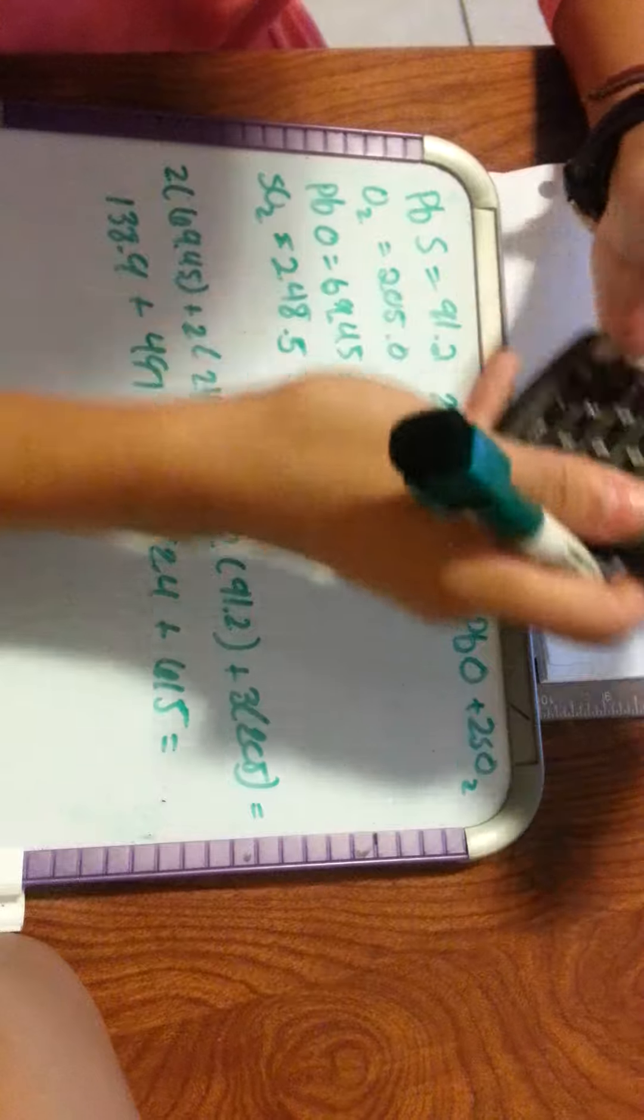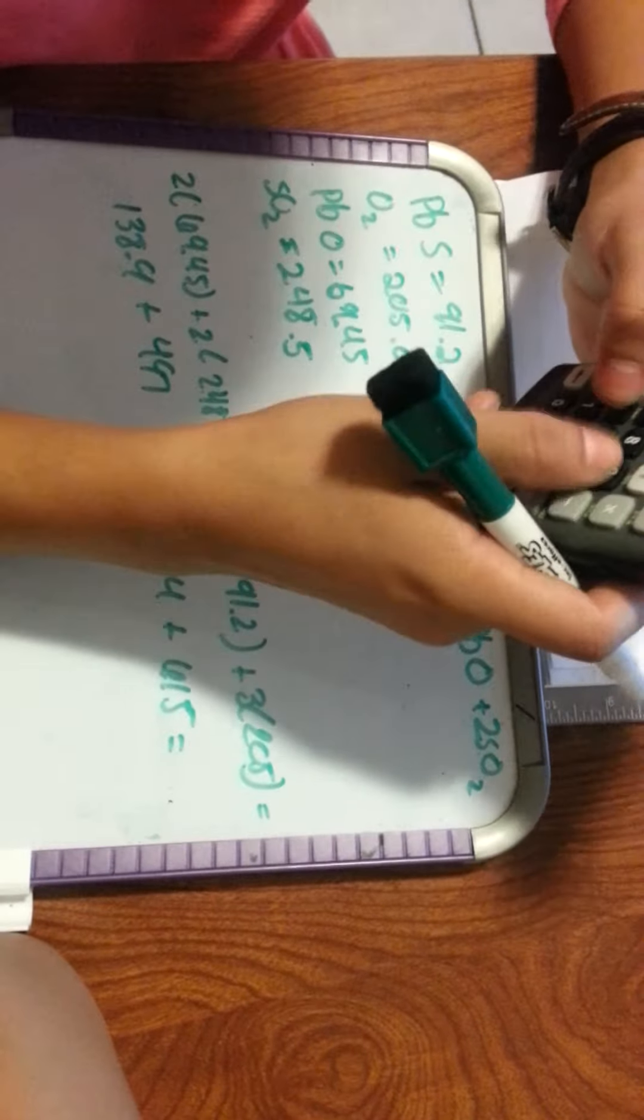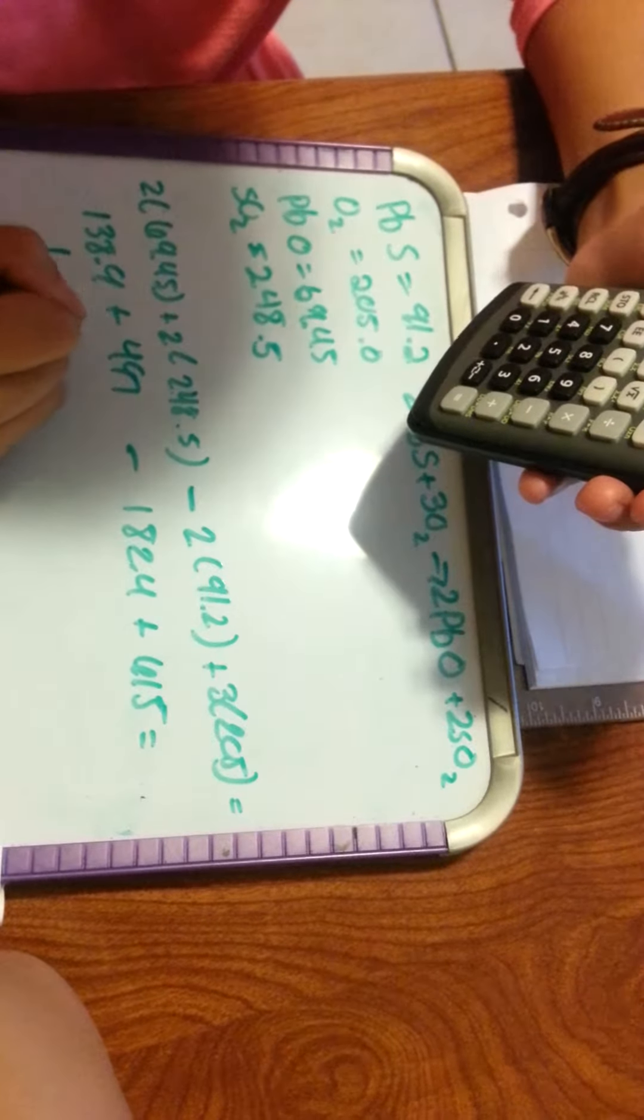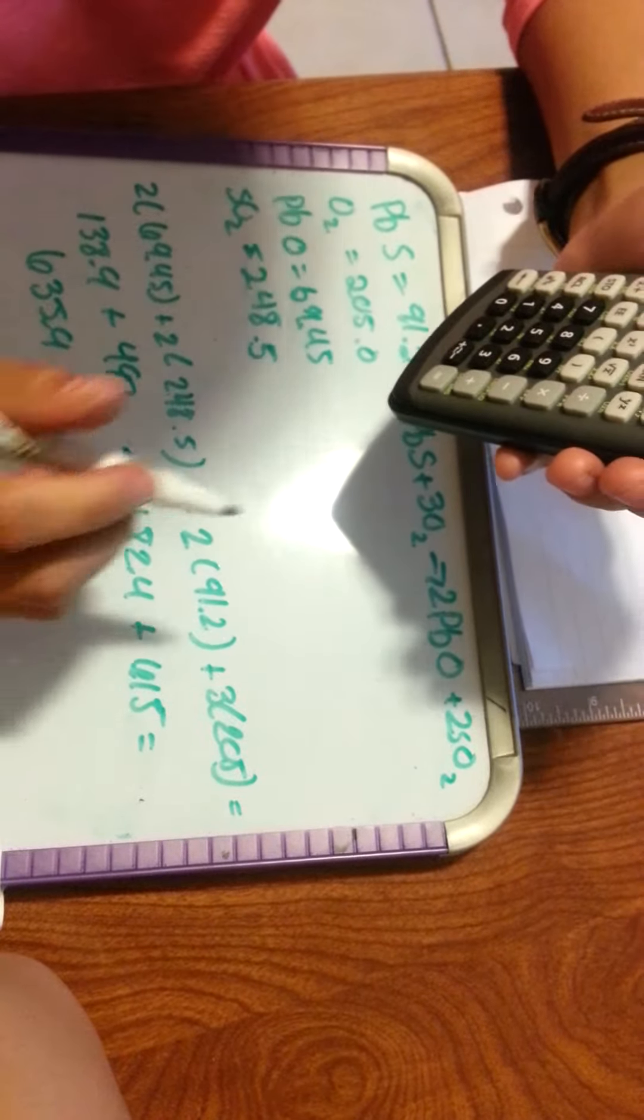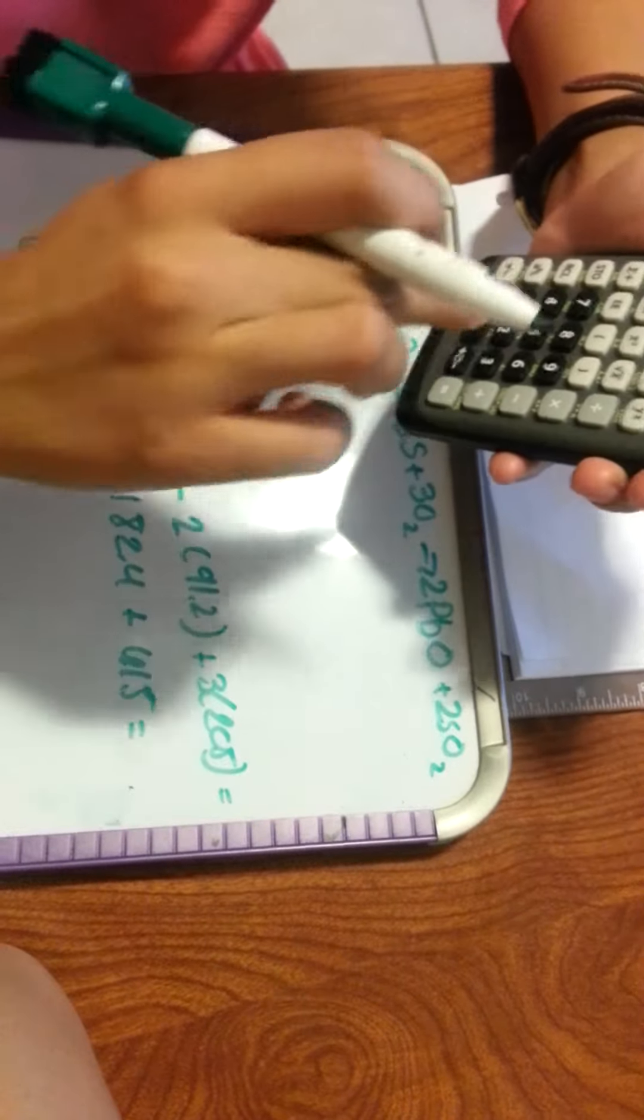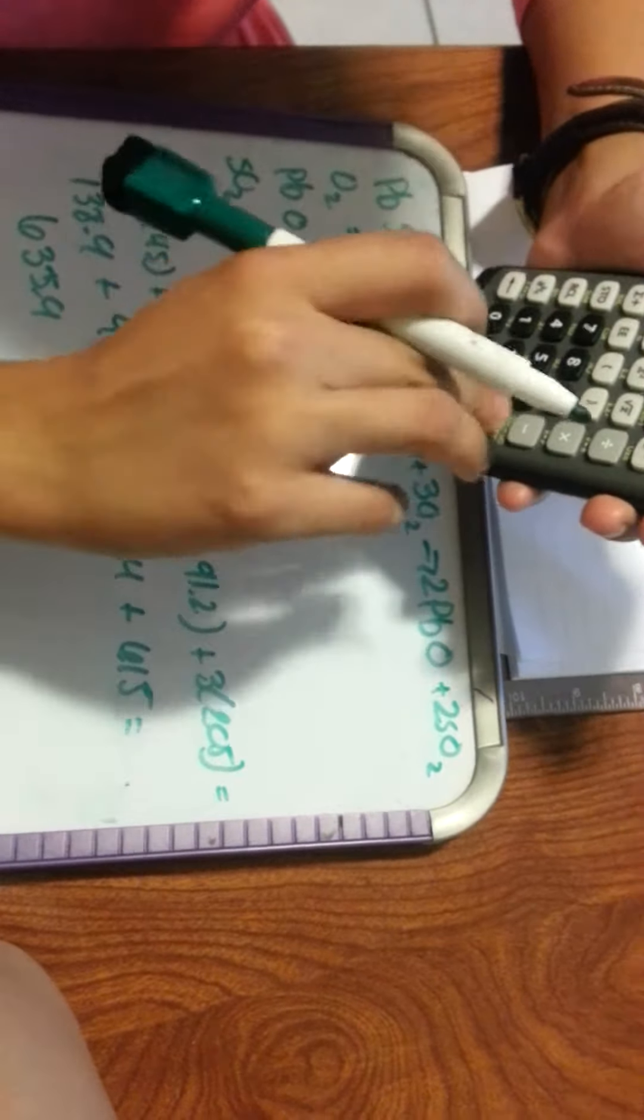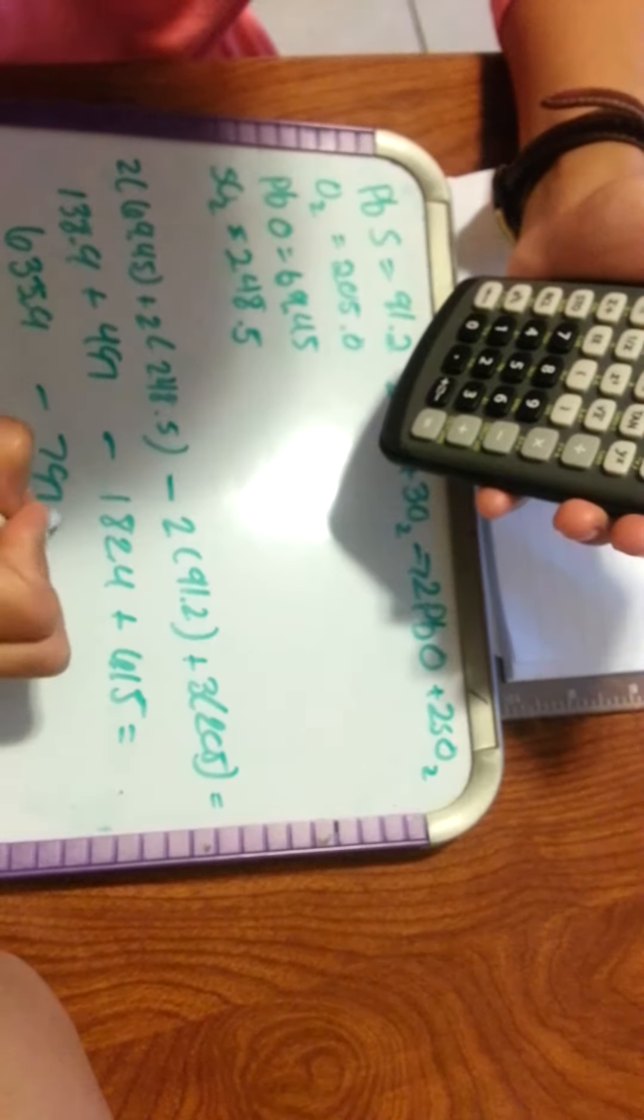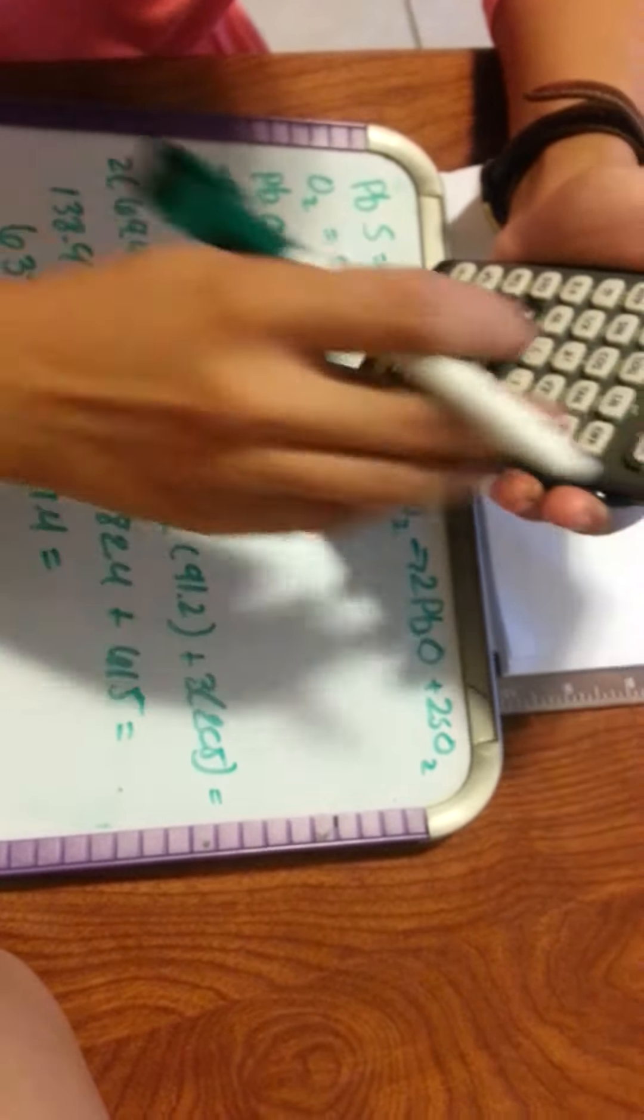So then 38.9 plus 47 plus 63.45, and 182.94 plus 65.7 minus 7.4. So now we just subtract that.